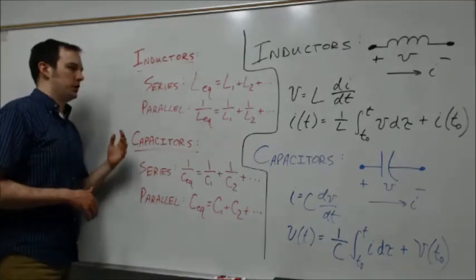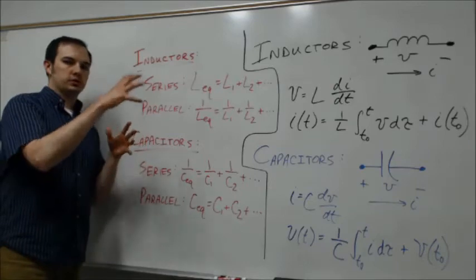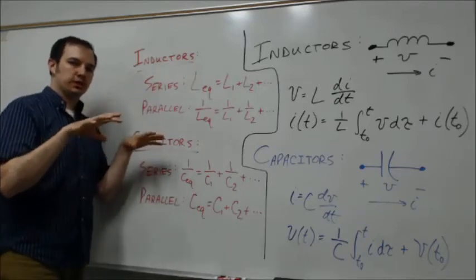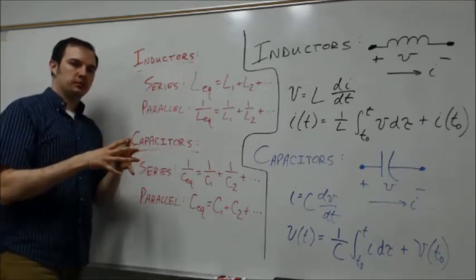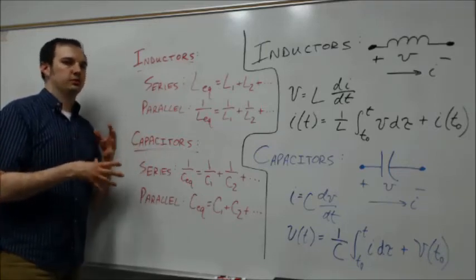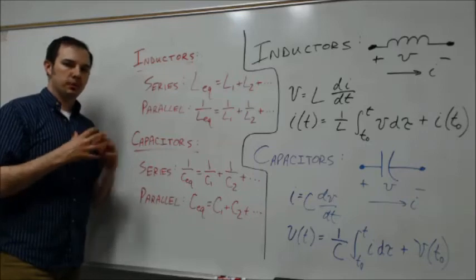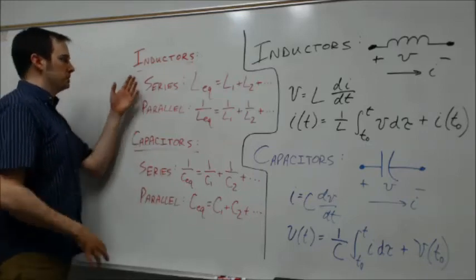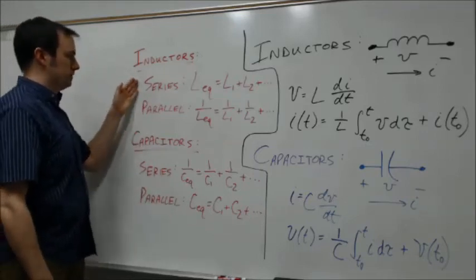Alright, so the final thing we wrapped up at the end of the period was talking about how once we start to see inductors and capacitors in circuits, how we can again reduce them down to equivalent inductances or equivalent capacitances, very similar to the series and parallel rules that we've been using for resistors.